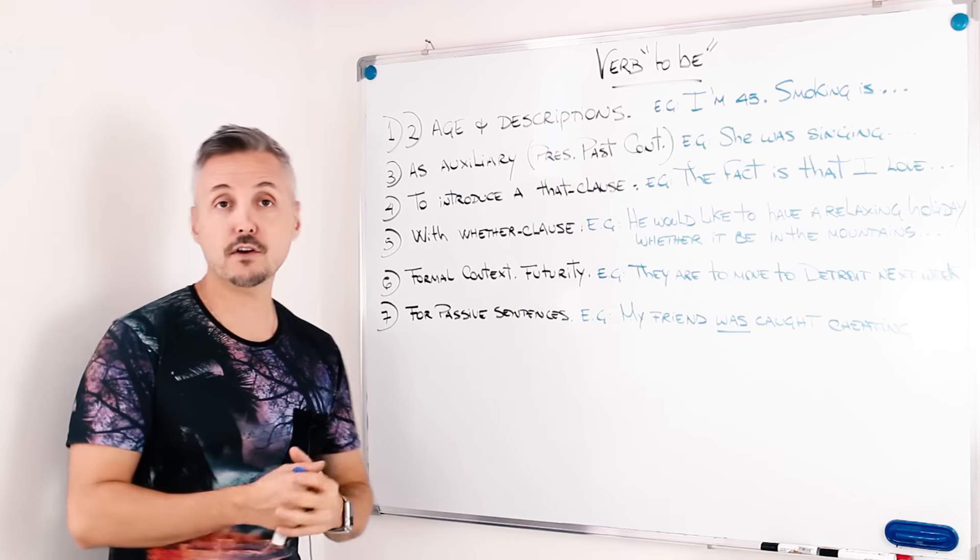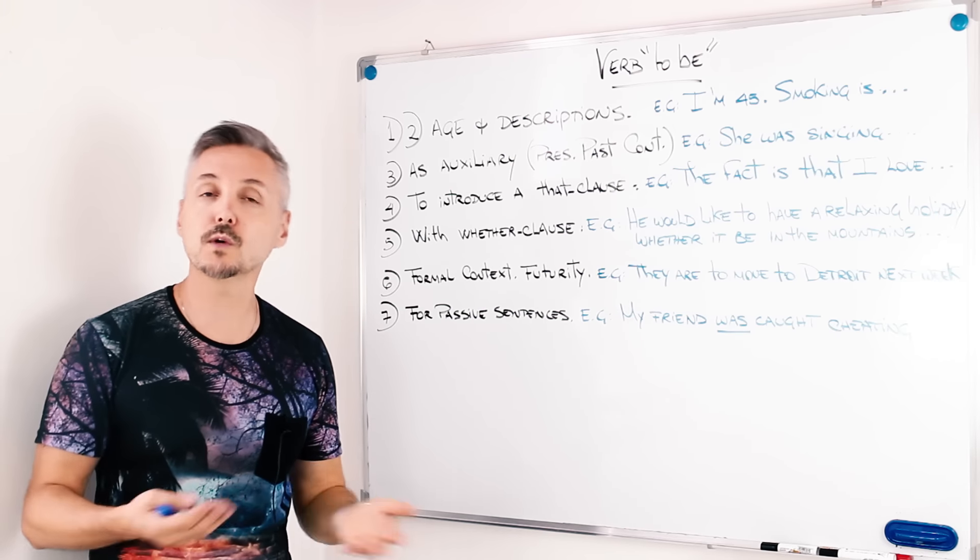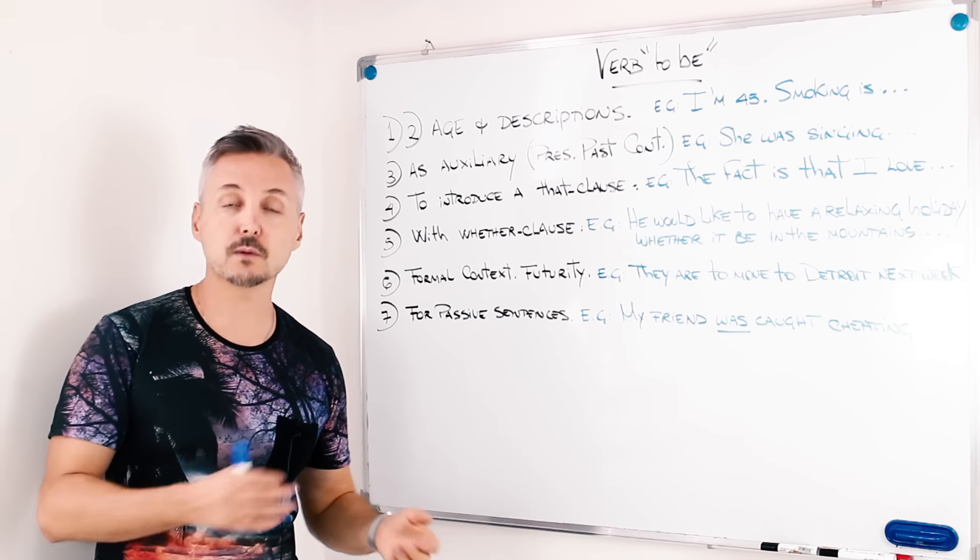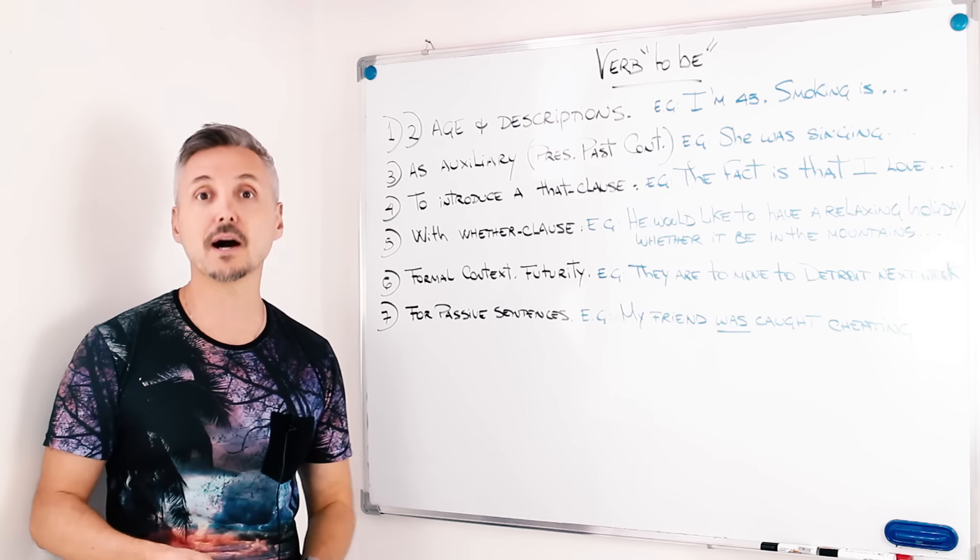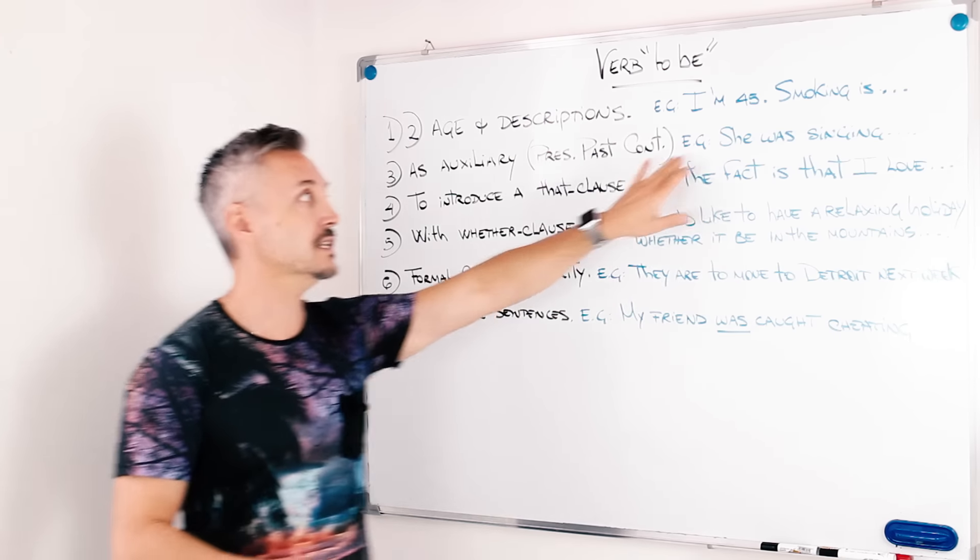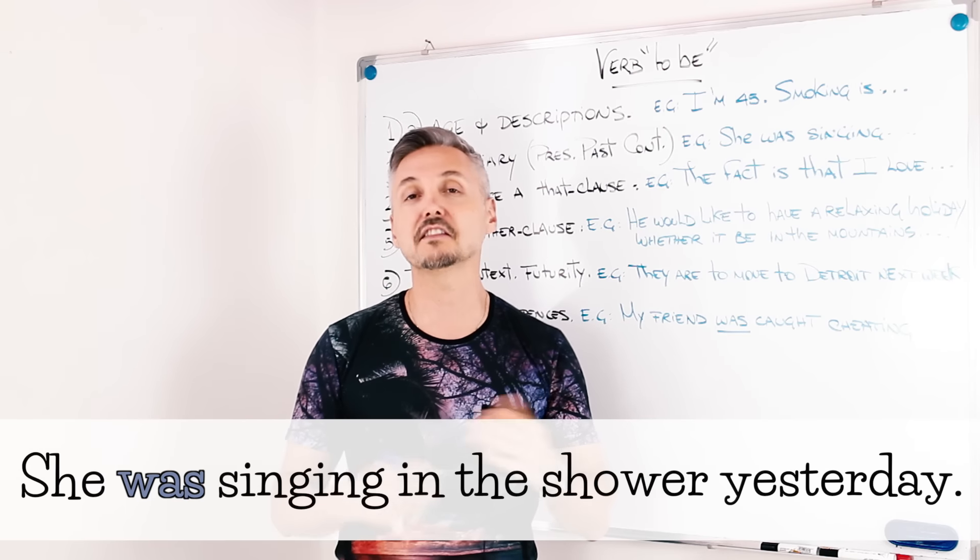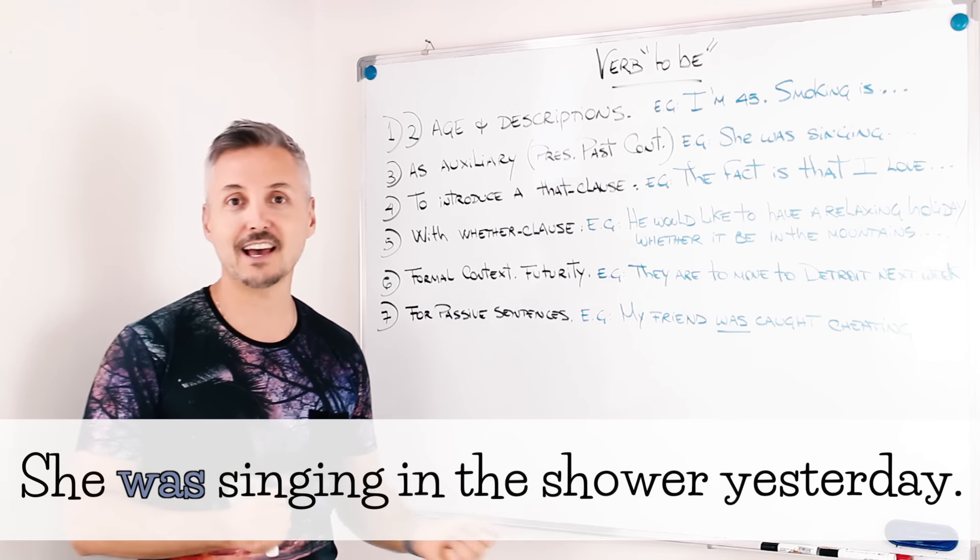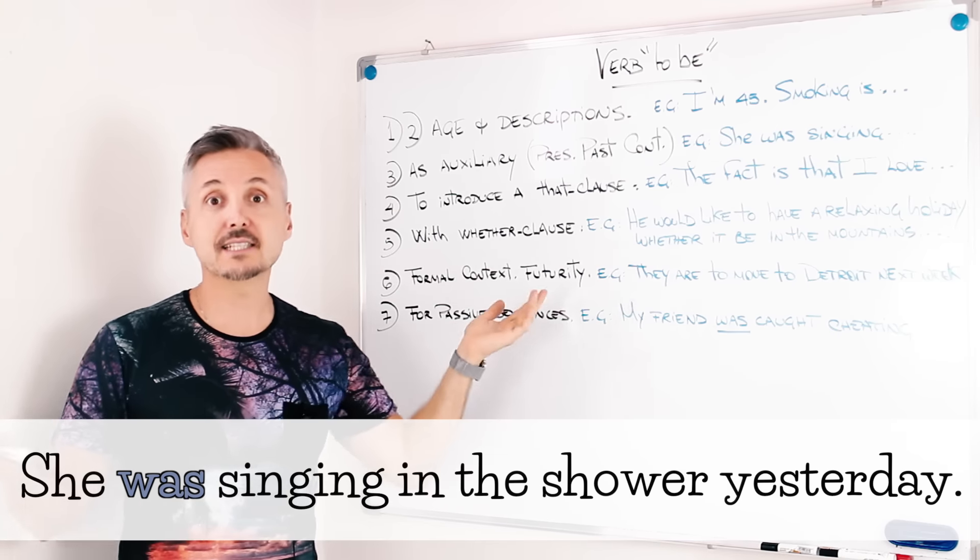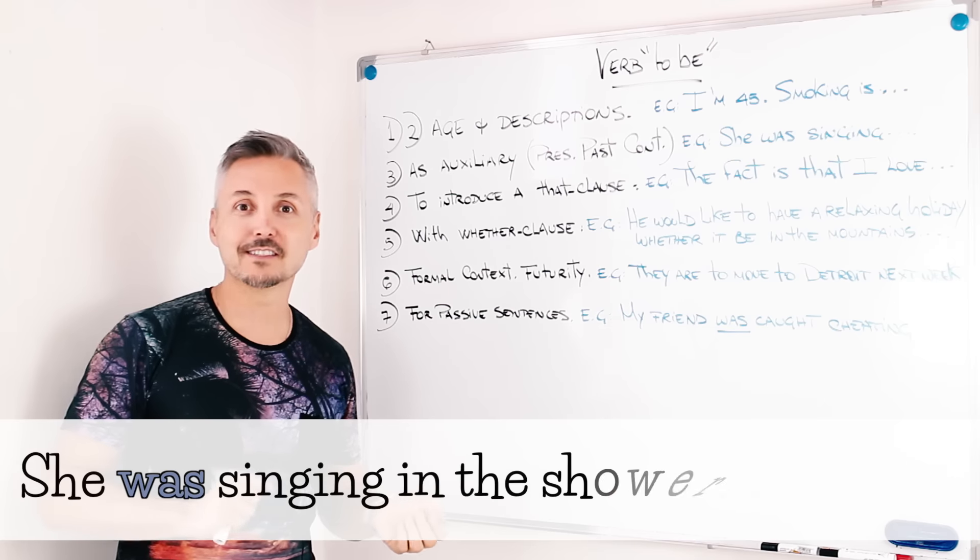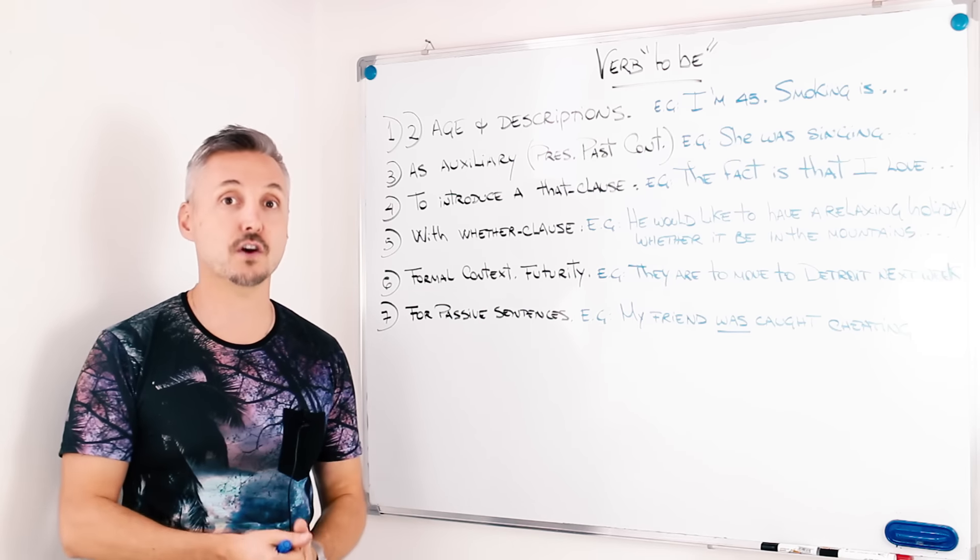So for the third one, as an auxiliary. And in which tense do we use the verb to be as an auxiliary? Present and past continuous. Yes. Just like my example. For example, she was singing in the shower yesterday, I said. Or she is singing right now for the present continuous. So as an auxiliary verb.